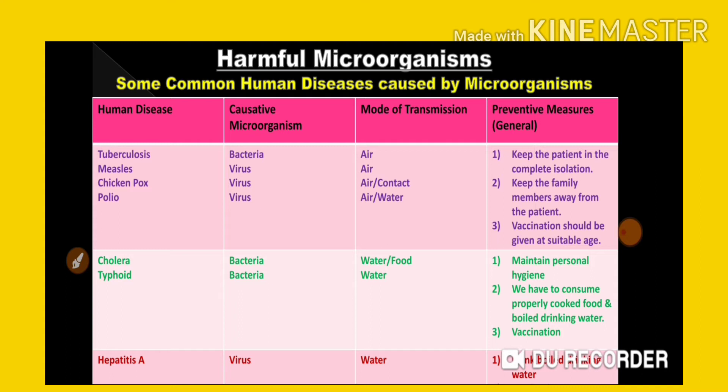The mode of transfer can be through air, contact, or water, and different kinds of microorganisms bring each particular disease to the human body. In the fourth column we need to discuss precautions — what kind of precautions we need to take when we are suffering from these particular diseases.